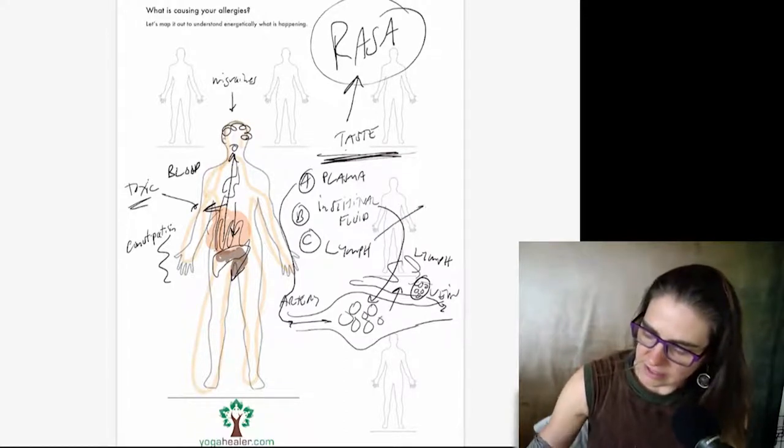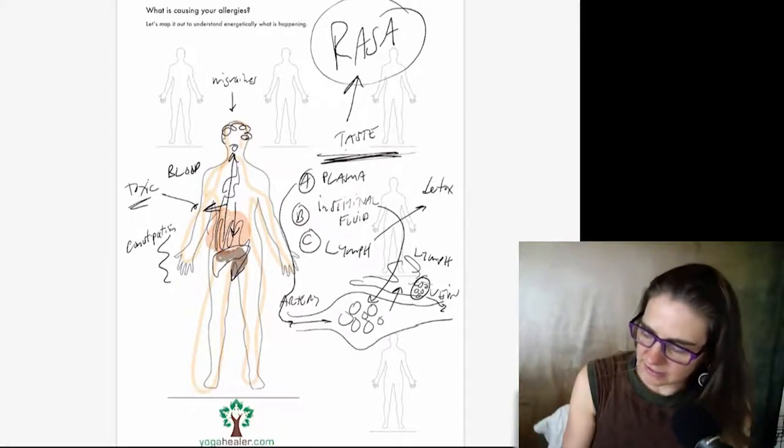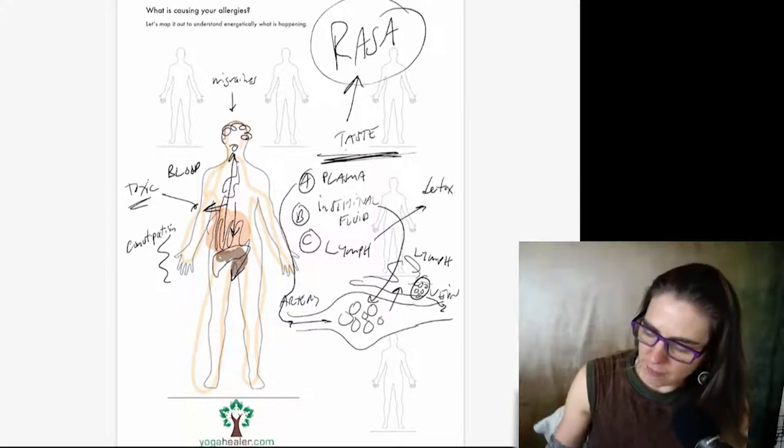So from there, it goes into the blood and then the blood is obviously circulating. The blood, remember it has plasma. It's plasma first, then secondary red blood cells, white blood cells, tertiary lymph. So the most basic tissue of the blood is this rasa, is this plasma. So now whatever toxins are in the digestive tract, they're now moving across into the blood and now they're circulating. So then the body's starting to use the lymph system to detox.